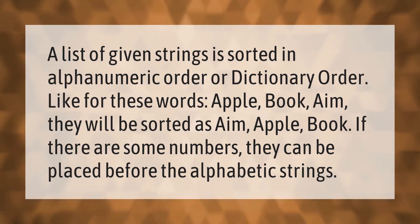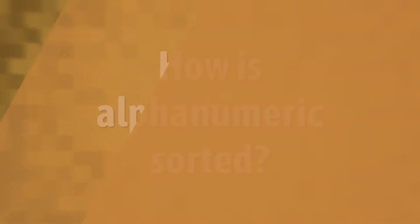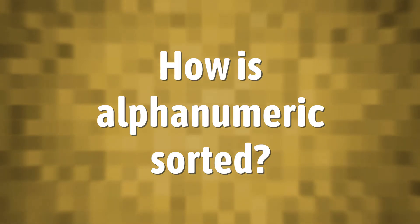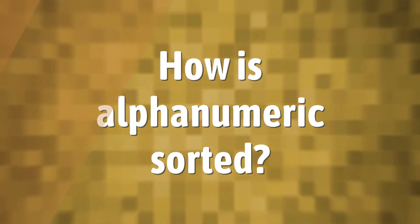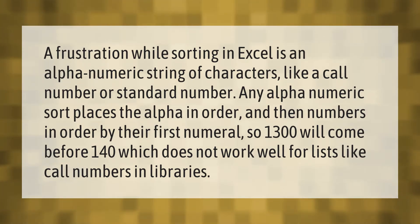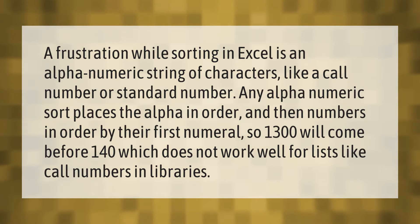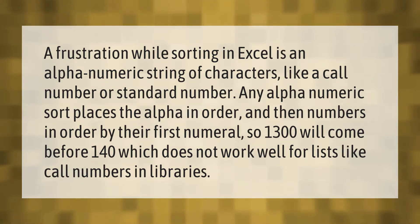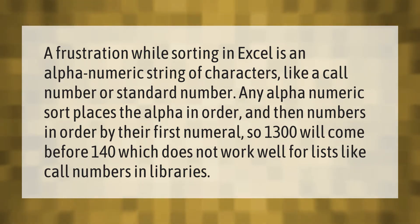A frustration while sorting in Excel is an alphanumeric string of characters like a call number or standard number. Any alphanumeric sort places the alpha in order and then numbers in order by their first numeral, so 1300 will come before 140, which does not work well for lists like call numbers in libraries.